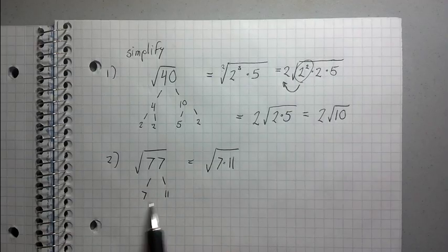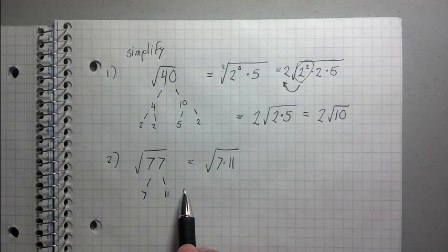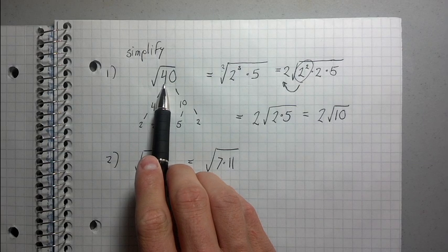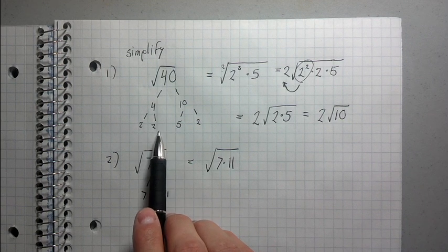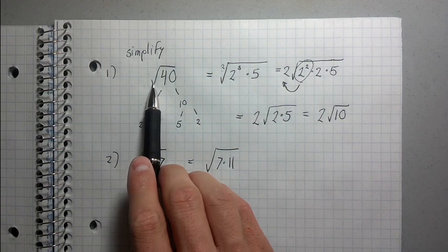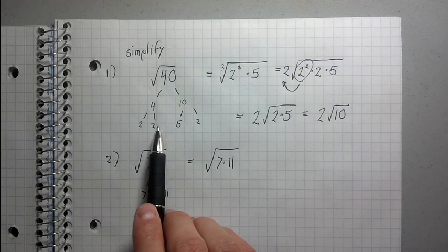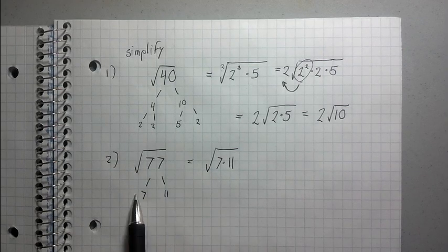There's nothing you can do about it. So I wanted to show you this example because it illustrates the fact that the only time in which you can simplify a square root is when you have at least pairs, you have at least pairs of factors, and not just single factors.